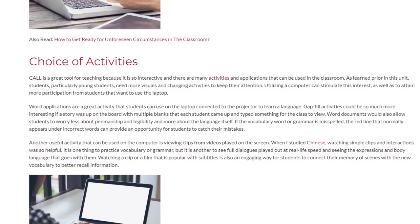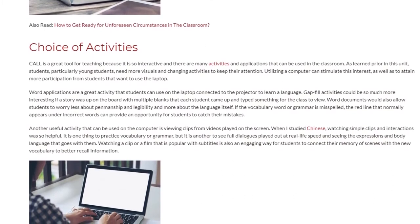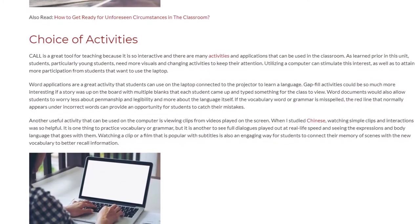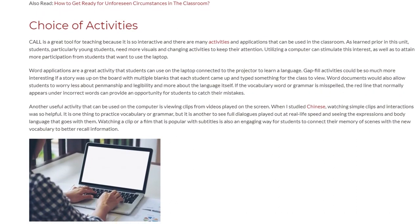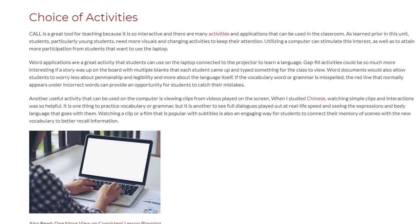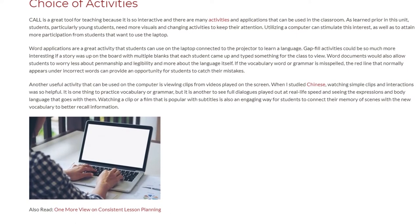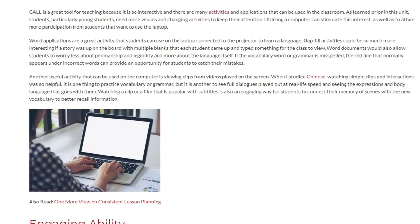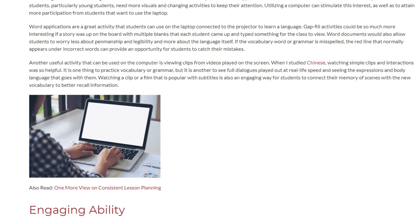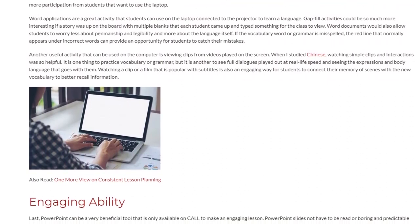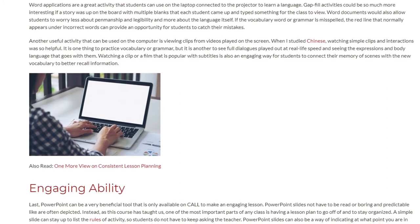Word documents would also allow students to worry less about penmanship and legibility and more about the language itself. If the vocabulary word or grammar is misspelled, the red line that normally appears under incorrect words can provide an opportunity for students to catch their mistakes. Another useful activity that can be used on the computer is viewing clips from videos played on the screen. Watching simple clips and interactions was so helpful. It is one thing to practice vocabulary or grammar, but it is another to see full dialogues played out at real-life speed and seeing the expressions and body language that go with them. Watching a clip or film that is popular with subtitles is also an engaging way for students to connect their memory of scenes with the new vocabulary to better recall information.